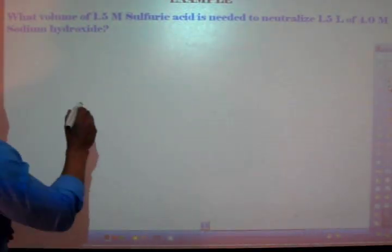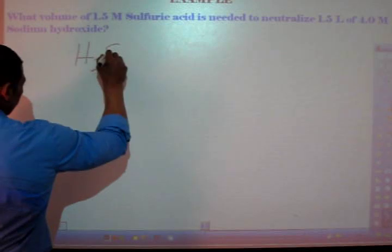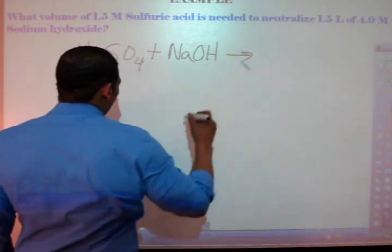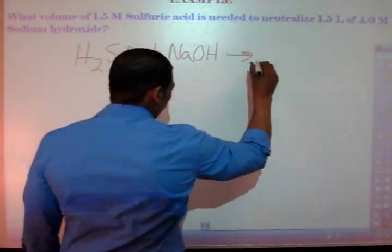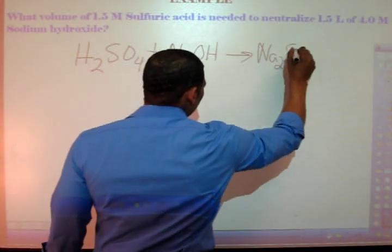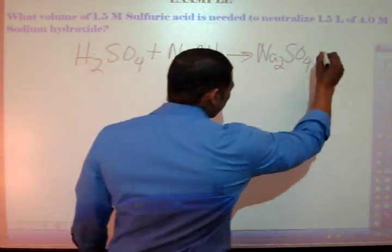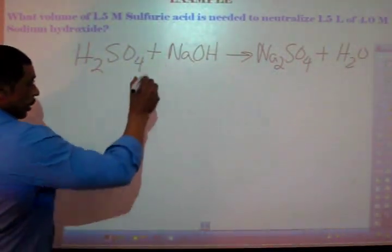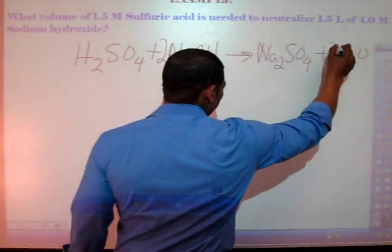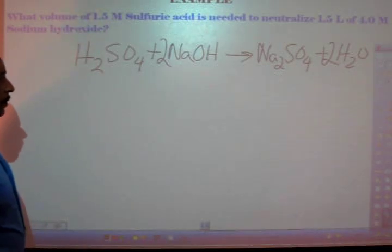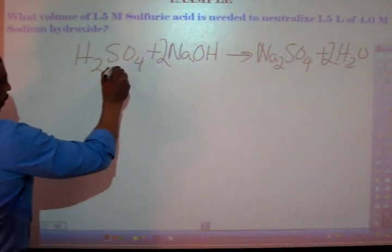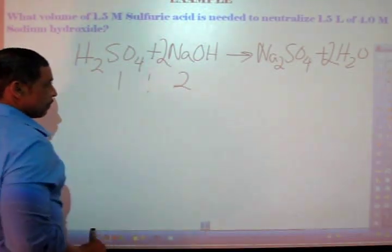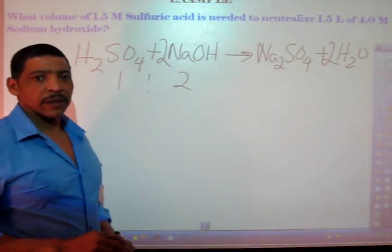We answer this problem by first writing the balanced equation. When our acid reacts with the base, we produce a salt, in this case sodium sulfate, and of course water. We balance the equation by placing a 2 in front of the sodium hydroxide and a 2 in front of the water. This gives a ratio of 1 to 2 in terms of acid compared to my base. This information will be very important in a minute or so.